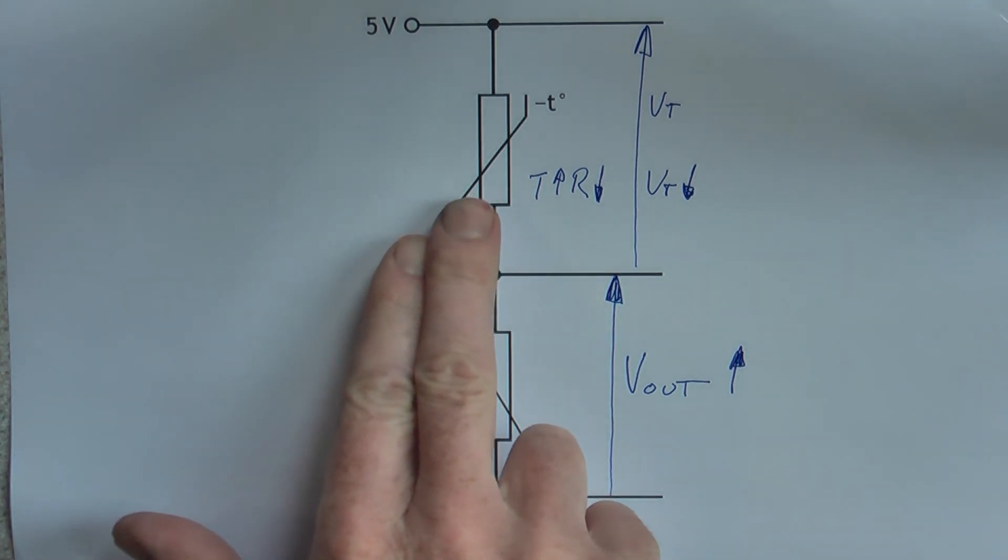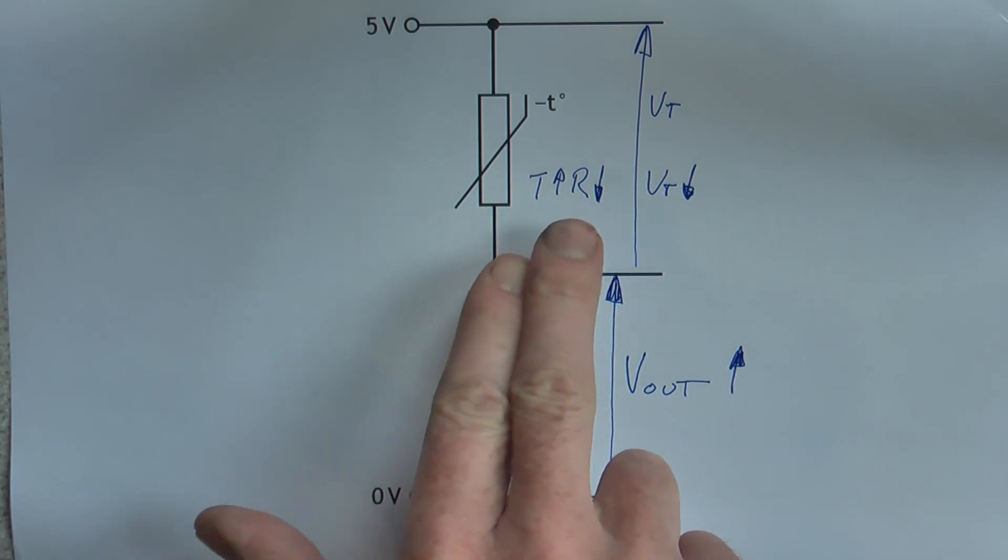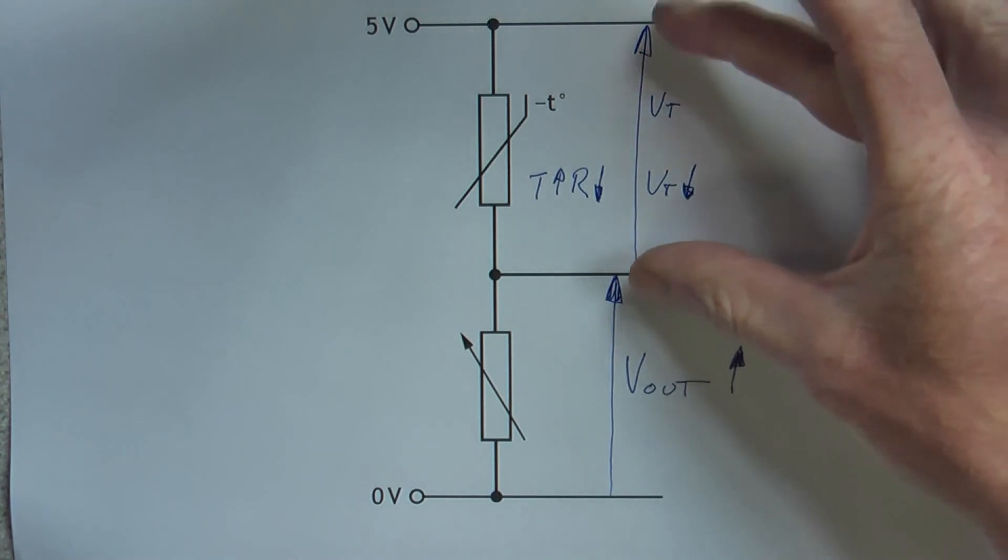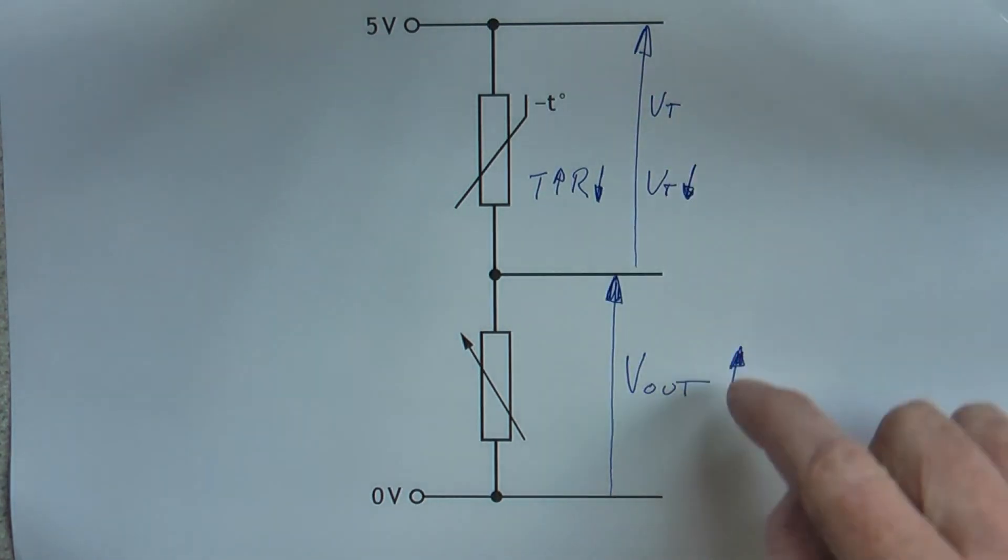As the temperature goes up, the resistance of the thermistor will go down. So if that resistance is going down, that voltage Vt is also going down. So Vt is going down, V_out is going up.